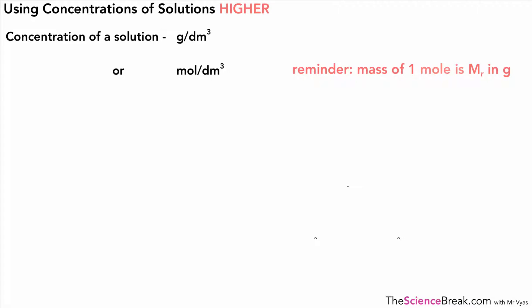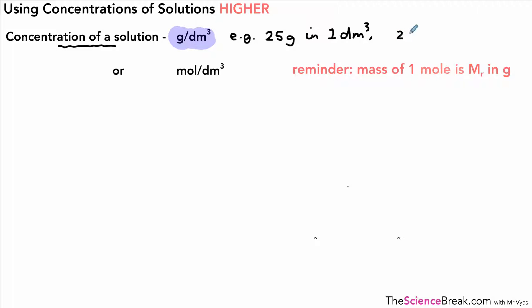Hello, we're going to go through some quite tricky stuff for this video. It is about using concentrations of solutions for the higher tier for GCSE chemistry or GCSE trilogy. We've visited the idea of concentrations of solutions before — we talked about them being measured in grams per decimetre cubed. For example, if you had 25 grams of a substance in one decimetre cubed of water, we could describe that as a solution of concentration 25 grams per decimetre cubed.